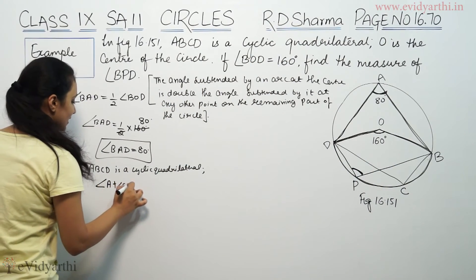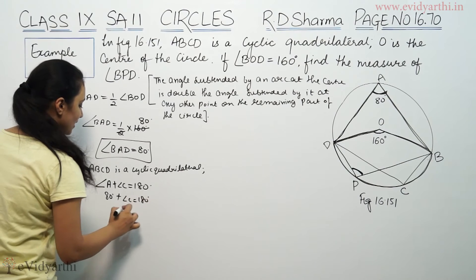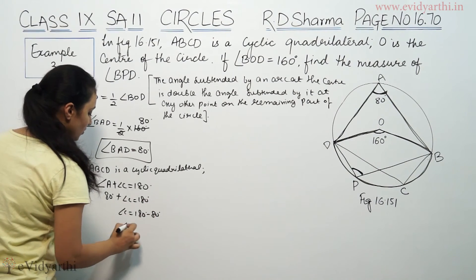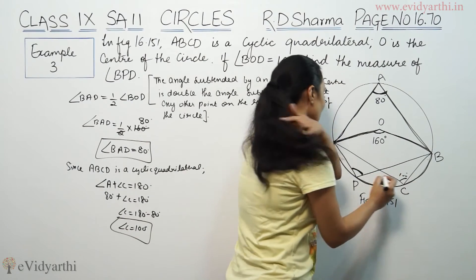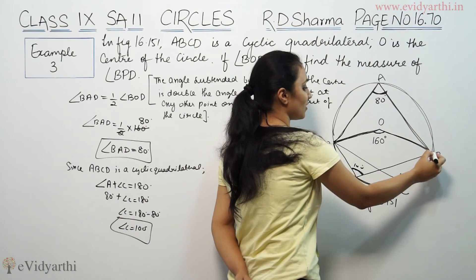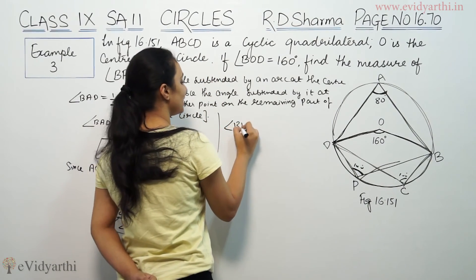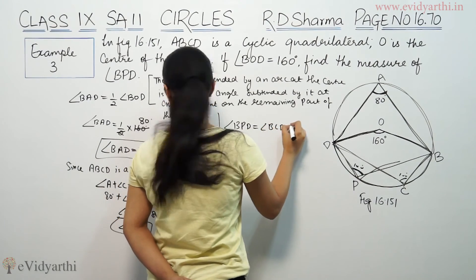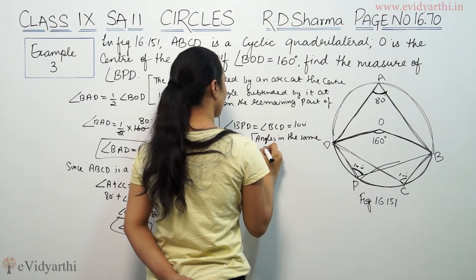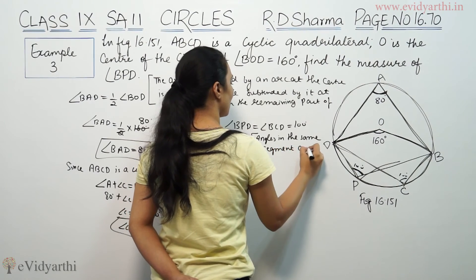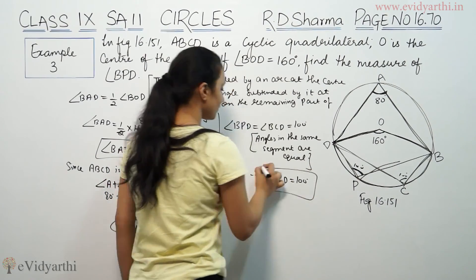Since angle A is 80 degrees, angle C will be 100 degrees. And from here, angle BPD equals angle BCD equals 100 degrees, because they are in the same segment. Angles in the same segment are equal. Therefore, angle BPD equals 100 degrees.